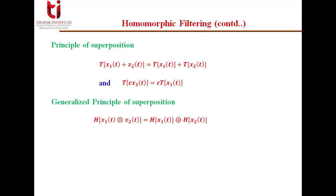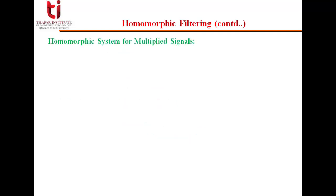The generalized principle of superposition involves an operator that combines two signals with a non-linear operation (shown as a cross-in-circle symbol), and a function — such as the logarithm — that converts that operation into addition. Similarly, it should follow the homogeneity property. Converting one operation to another by applying such a function is known as the generalized principle of superposition, and it leads to the design of generalized linear filtering, or homomorphic filtering.